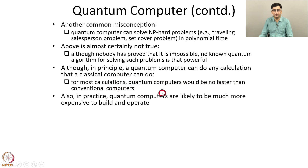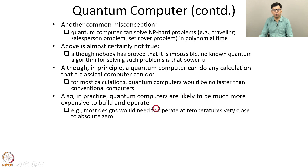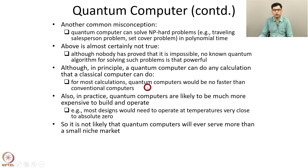Quantum computers are likely to be much more expensive to build and operate than classical computers. For example, most designs would need to operate at temperatures very close to absolute zero, so the cost involved in cooling is very large. For this reason, whenever possible, we will perform a task using classical computers. In summary, it is not likely that quantum computers will ever serve more than a small niche market; for the rest of the computational tasks, classical computers will continue to be used.